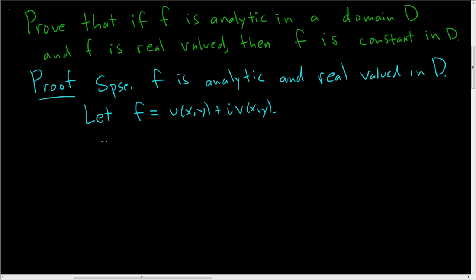Now since F is real-valued, it means it has no imaginary part. The imaginary part is zero, so V of X, Y is equal to zero.